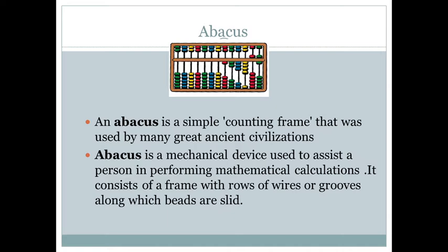The first calculator — or computer, whatever you want to call it — was known as the abacus. An abacus is a simple counting frame that was used by many great ancient civilizations. We found this in China and even in Harappa and Mohenjo-daro. Abacus is a mechanical device used to assist a person in performing mathematical calculations. It consists of frames with rows, wires or grooves, along with beads that slide. If you look at the image, you can see those rods and beads. The abacus was basically used for calculation.